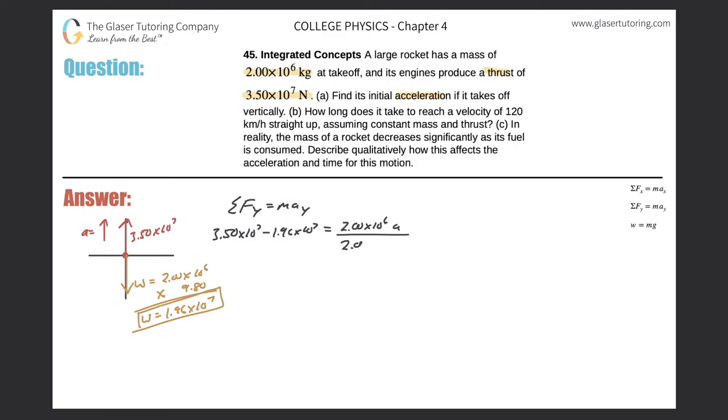Easy to solve this. Just divide out the 2.00 times 10 to the 6 from both sides. So my acceleration here will be 3.5 times 10 to the 7th minus 1.96 times 10 to the 7th, divided by 2 times 10 to the 6th. We get a value of 7.70 meters per second squared.